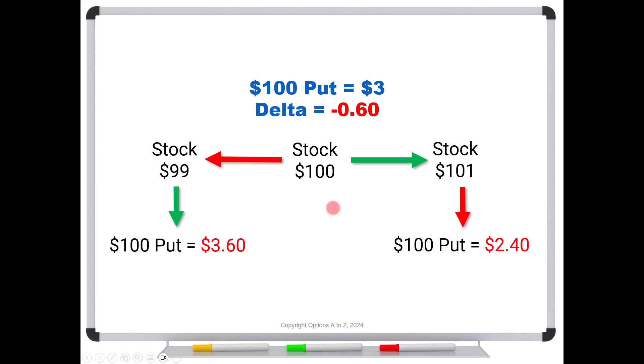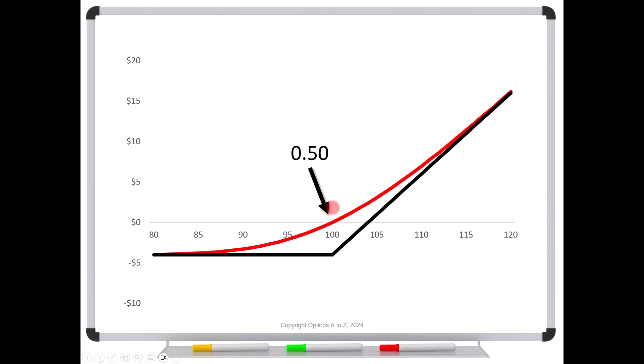Graphically, it's easier to interpret and to see what's happening. Here's a risk graph for a $100 call. Remember, we get the bend right there at $100. And the black line is the profit or losses at expiration, whereas the red line is the current curve, current profit or loss diagram.